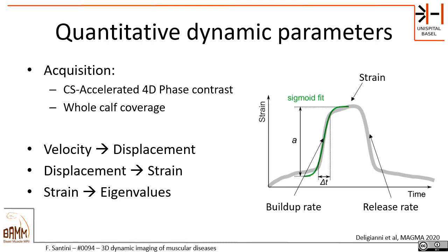The strain has a behavior over time: a relaxed state initially, then it reaches a plateau, and then finally returns to the relaxed state. We will analyze the value at the plateau, which we simply call strain, and we will also analyze the two rates at which the plateau is reached and at which the relaxation state is reached — called the buildup rate and release rate.